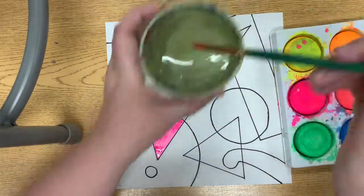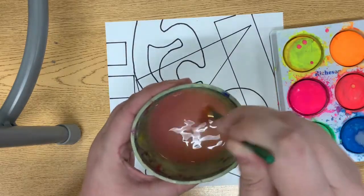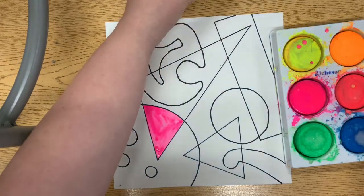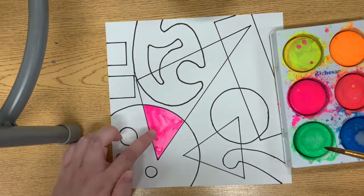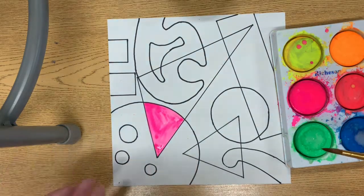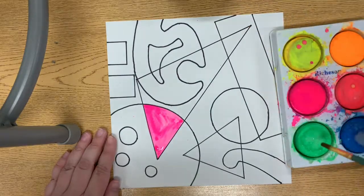Now my brush is dirty, so I need to swirl it. Make sure it touches the bottom of the cup and then wipe it on the edge. If this triangle is pink, then any shape that touches it can't be pink - it should be a different color. So I'm going to swirl in the green.